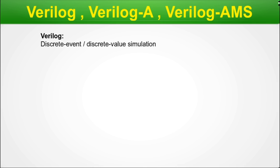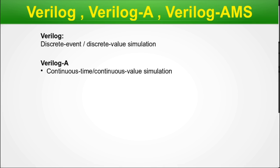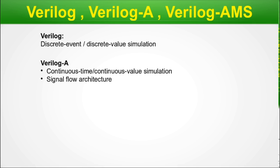Verilog simulations are discrete event and discrete value. Verilog A is continuous in time and continuous value simulation because it is for analog. Analog values change with time — which is what we see in a transient simulation in SPICE, with time on the X axis and voltage or current on the Y axis, showing how a waveform changes over time. There are also two different architectures of Verilog A modeling: signal flow and conservative.